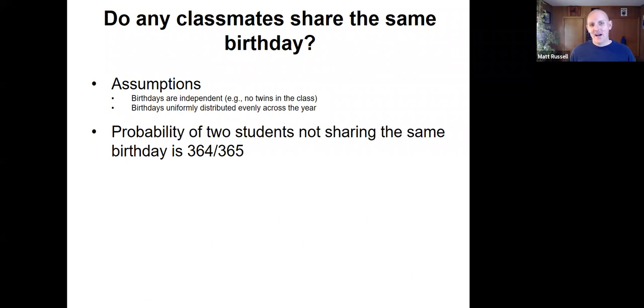But we can quantify this by asking the probability of two students not sharing the same birthday and quantify that. Well, we know if there are 365 days in the year, there's a very high likelihood that two people don't share the same birthday, or 364 divided by 365, nearly certain that they don't share the birthday.